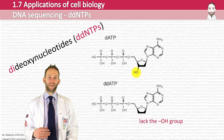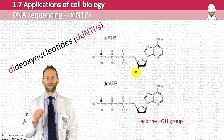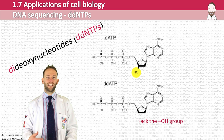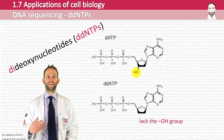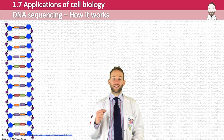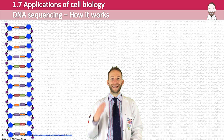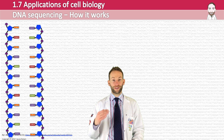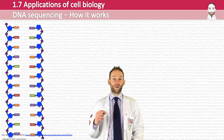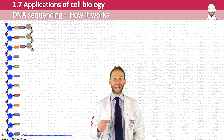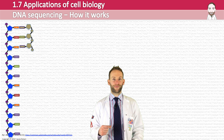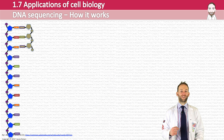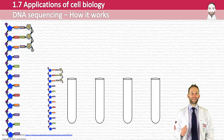Now let's look at how Frederick Sanger used those two molecules to perform chain termination. Step one: the DNA to be sequenced is heated to break the hydrogen bonds and separate the two strands. A primer is then annealed to the five prime end of the template strand. The primed DNA is then added into four separate reaction vessels.